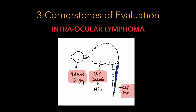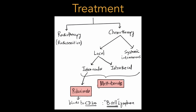What are the three cornerstones of evaluation for intraocular lymphoma? First, perform a diagnostic pars plana vitrectomy or vitreous biopsy. Second, complete evaluation of the central nervous system including history and neuroimaging. Third, perform a cerebrospinal fluid tap via lumbar puncture to identify malignant cells in the CSF. These are the three cornerstones of evaluation.